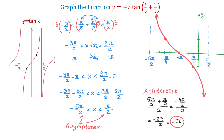To graph this function, first we found the vertical asymptotes by solving the inequality. Then we found the x-intercept, which is the point right in the middle between two consecutive asymptotes. Then we found two more points — one halfway to the right and one halfway to the left. After plotting these three points, we connected them to get the graph. I hope you enjoyed this video. Please leave a comment and thank you for watching.